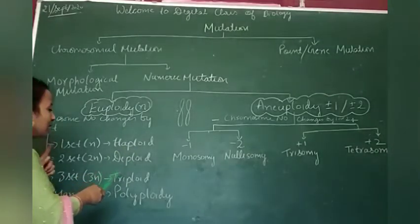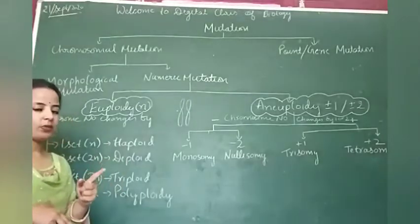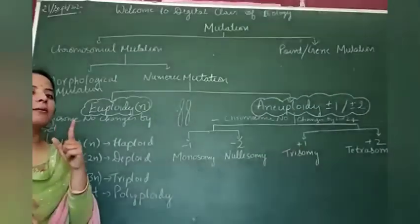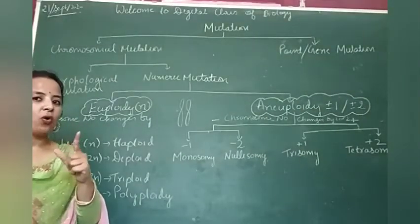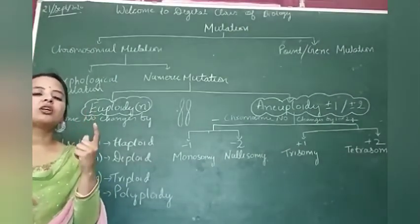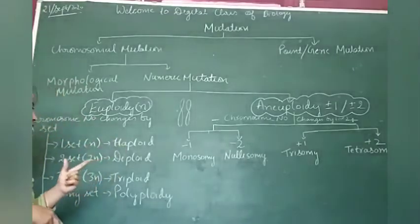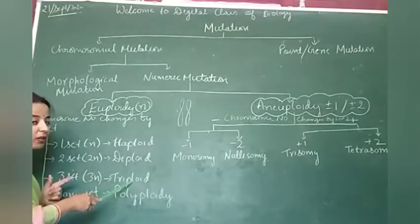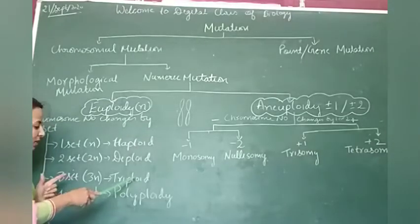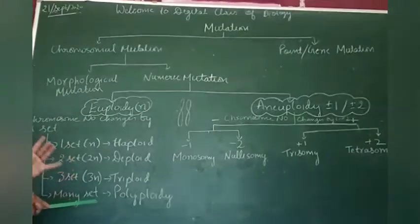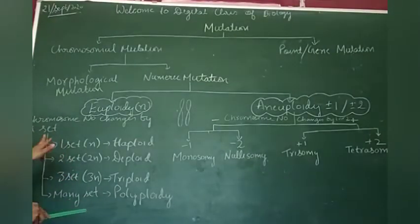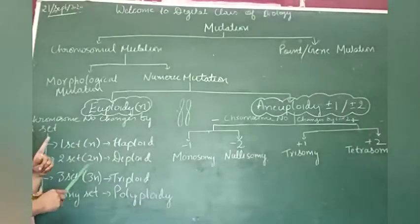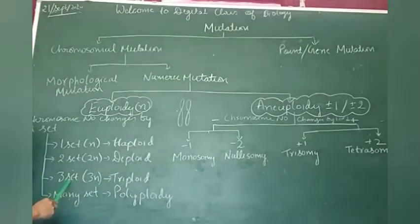One more is triploid. Where have we listened to this word before? We have heard about this word in sexual reproduction in flowering plants. There was one structure known as endosperm, and that is formed by triploid. There was triple fusion. I am not going into detail here because I'm sure you have got an idea.